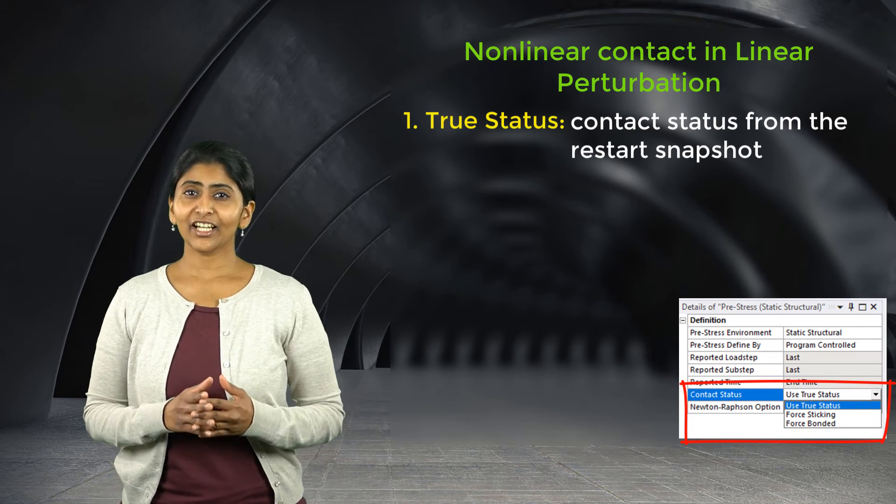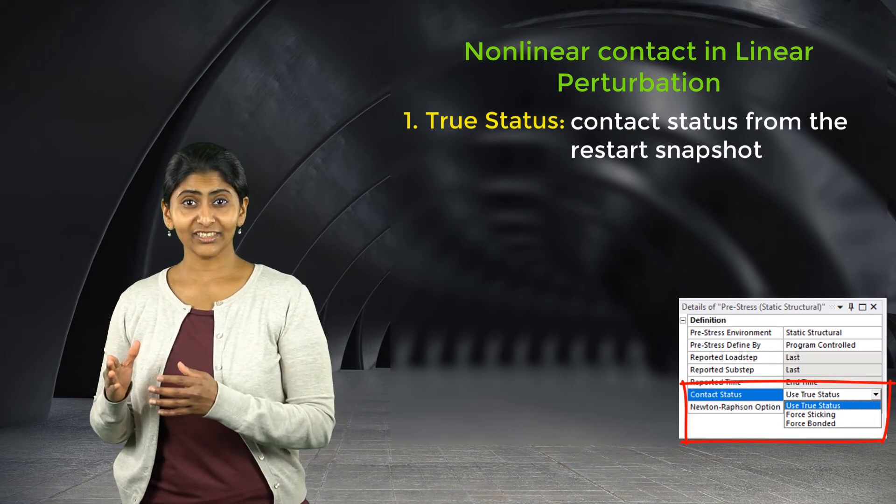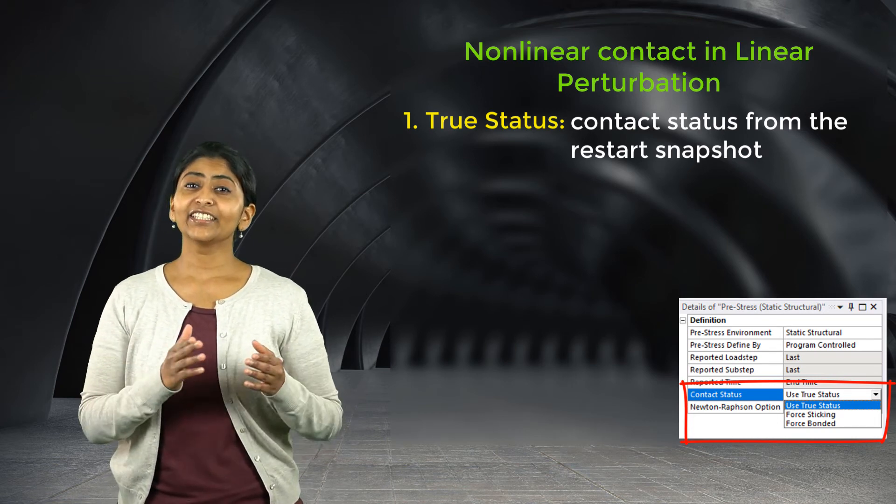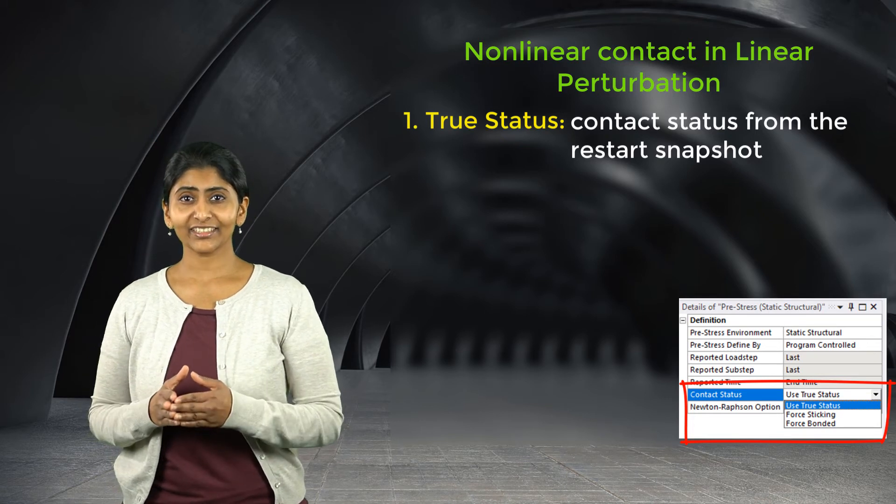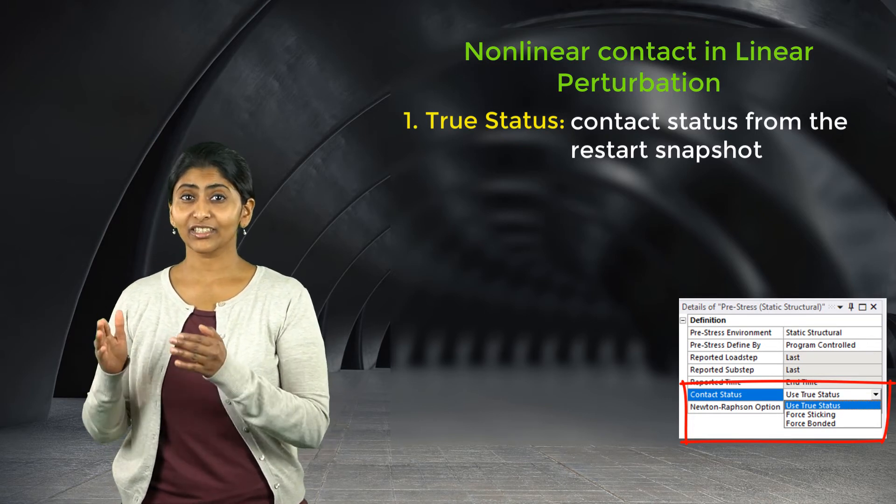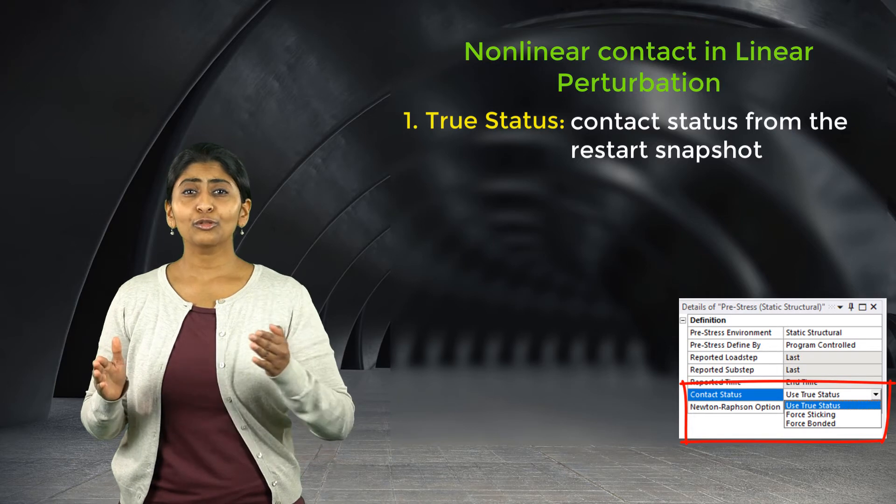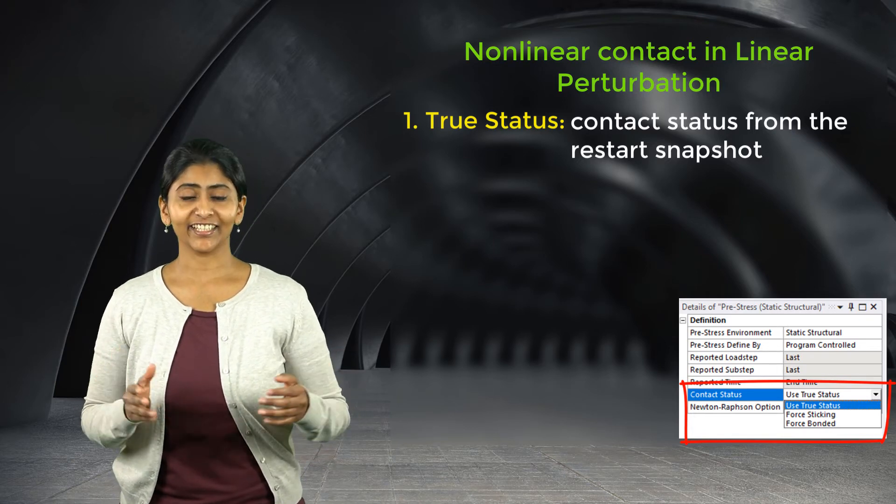The first one is true status, which uses the current contact status from the restart snapshot. If the previous run for parent static structural is nonlinear, then the nonlinear contact status at the point of restart is frozen and used throughout the linear perturbation analysis.